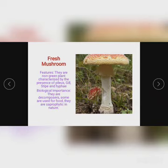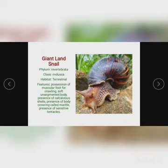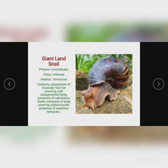The next specimen is giant land snail, which is under the phylum Invertebrata — meaning they do not have a vertebral column or backbone. The class is Mollusca; molluscs are soft-bodied animals. Some have shells, as you can see here. Its habitat is terrestrial, which means it is found on land.